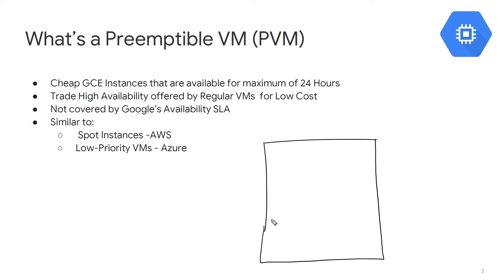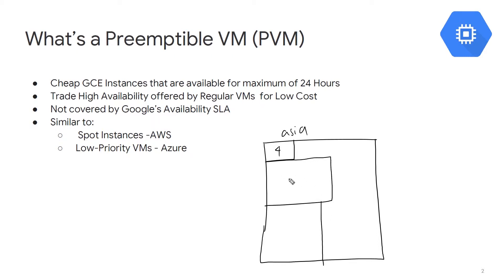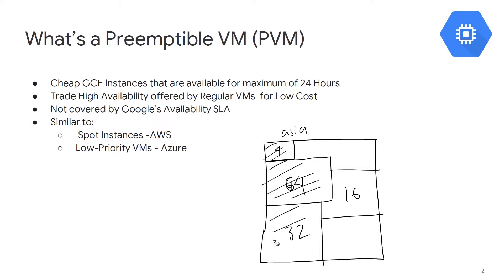Let's say we're at Google — this is our Asia region — and you have different customers all across the world, like Nike for example. They're all using different resources of different sizes: let's say some are using 4 CPU, some 64 CPU, some 32, some 16. It reaches a point where there's always an excess amount. Let's shade these out — all these are being utilized by different companies. I'm just using CPUs as an example of how things may happen.